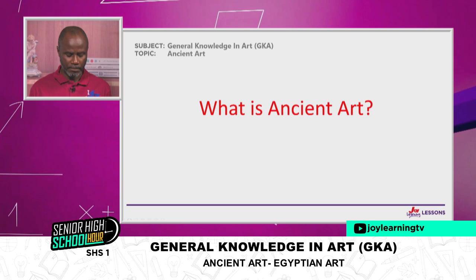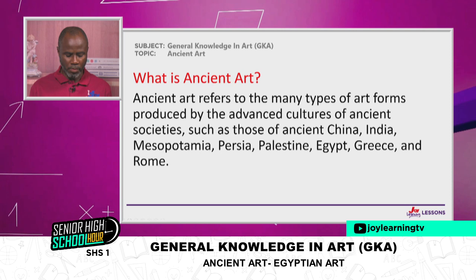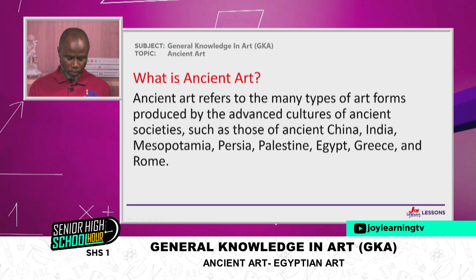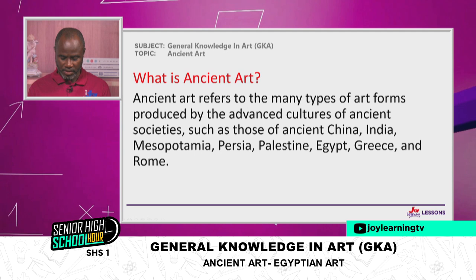So what is ancient art? Ancient art refers to the many types of art forms produced by the advanced cultures of ancient societies. So when we are talking about ancient societies, we are talking about China, India, Mesopotamia, Persia, Palestine, and of course Egypt, Greece, Rome — and these are just a few to mention.